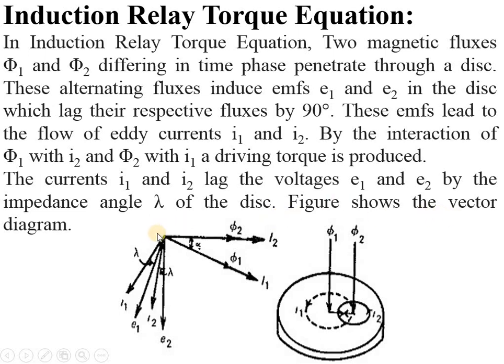The figure shows the vector diagram. This is my induction disc arrangement and these are my two fluxes φ1 and φ2 which will create the eddy currents i1 and i2. And i2 and i1 lag e1 and e2 by angle λ.